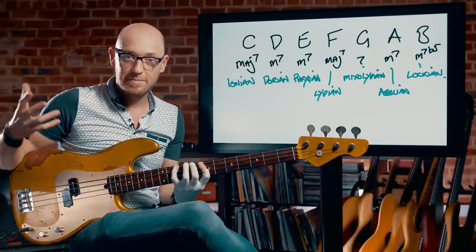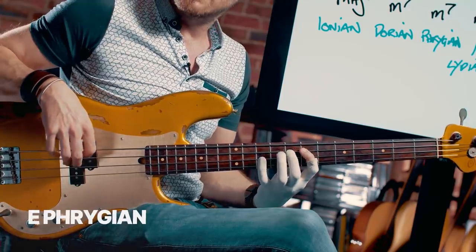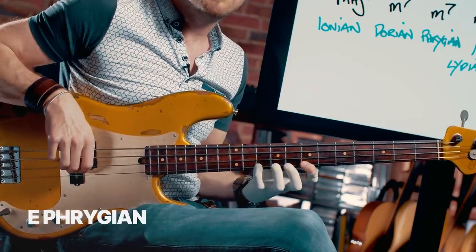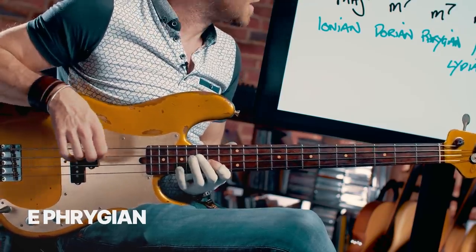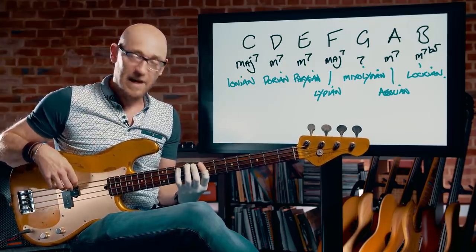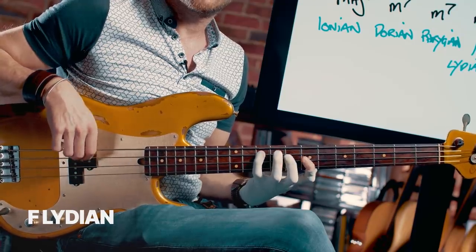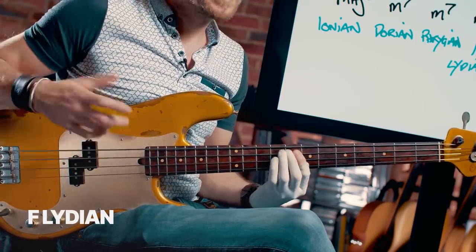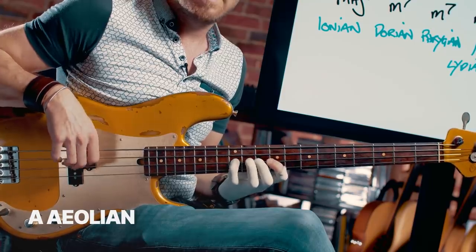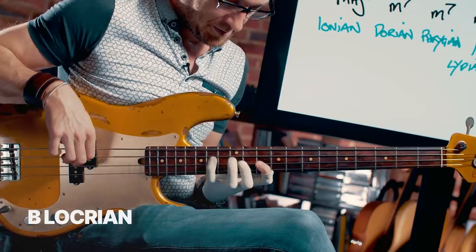How do we find E Phrygian? Same deal — we take that major scale pattern and instead of starting on C, we start on the E and play E Phrygian all the way up to the E. How do we find F Lydian? Same thing: we've got that C major scale as our main pattern, we play up to the F and keep going up the C major scale from that F, making sure to go up to the F and back down. Then we've got G Mixolydian, A Aeolian, B Locrian, and then C major again.